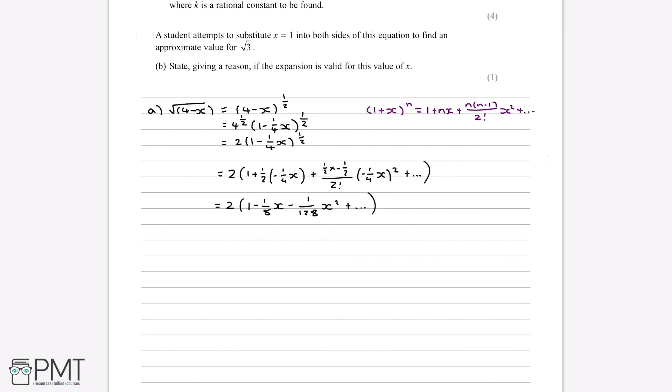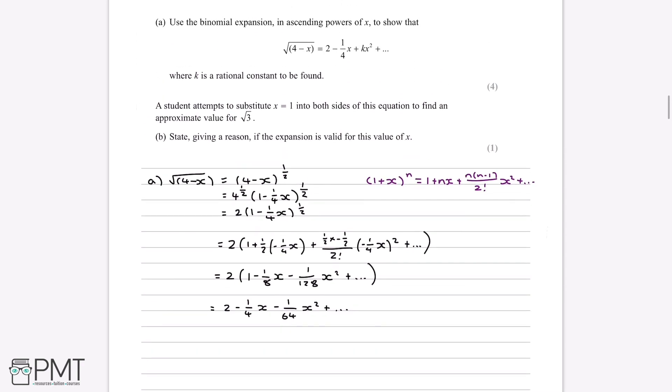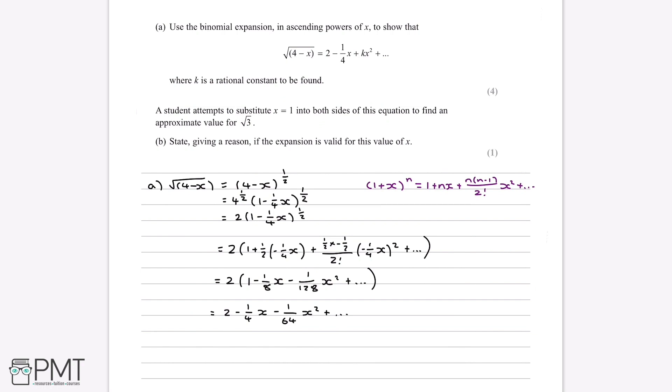And now all we have to do is multiply everything through by 2. So we're left with 2 minus a quarter x minus 1 over 64 x squared, plus etc. And you can see that this is in the exact same form as the question has up here. And we can say that therefore k is equal to minus 1 over 64.